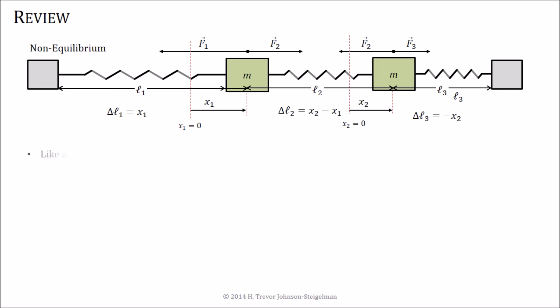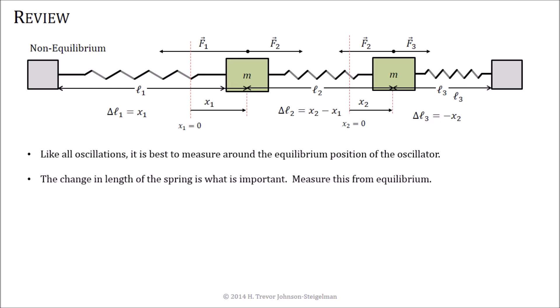So for quick review, like all oscillations, it's best to measure around the equilibrium position of the oscillators. And it's the change in the length of the spring that's important. And we measure that from equilibrium using x1 and x2 as our variables.